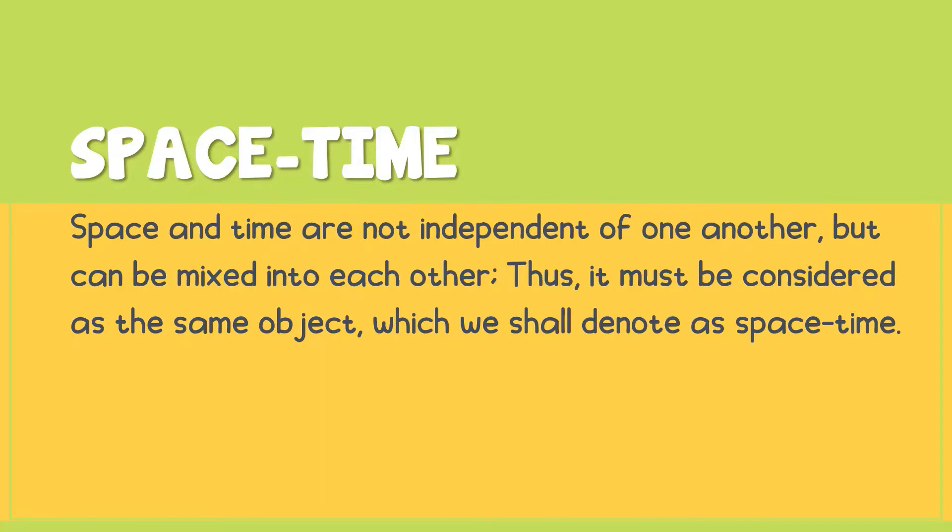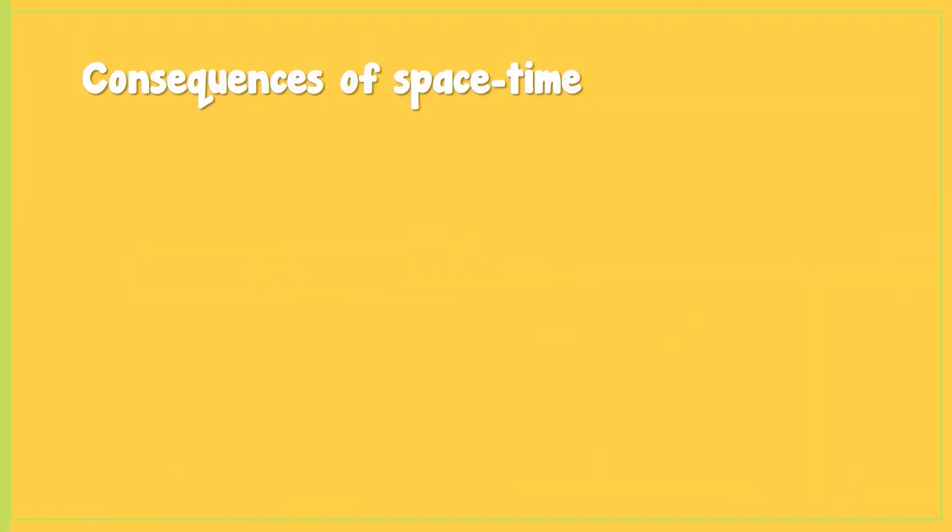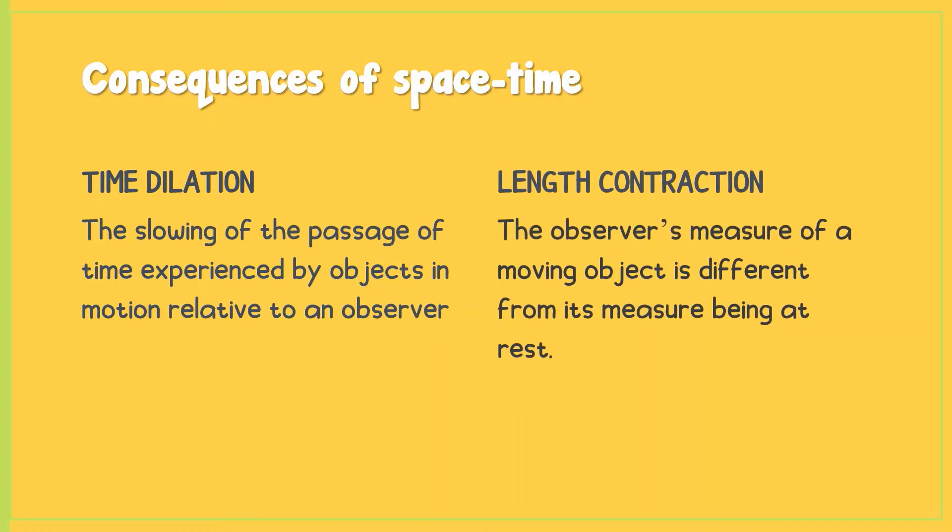Special relativity also stated that space and time are relative and they depend on reference frames. The consequences of space-time are time dilation and length contraction. Time dilation is the slowing of time that is experienced by objects in motion relative to the observer, and length contraction is when the observer's measure of a moving object is different from its measure being at rest.